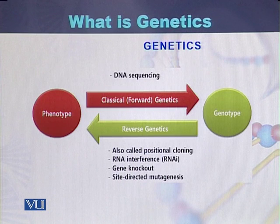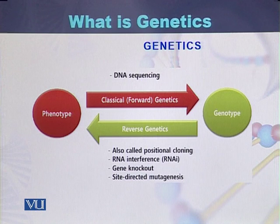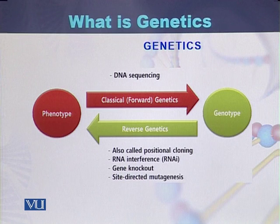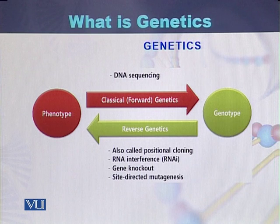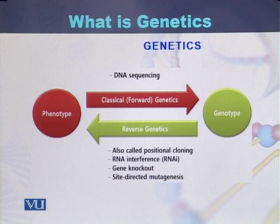If we study genotype based on the phenotype, it is called classical genetics or forward genetics, and it is usually performed by sequencing the DNA. While in reverse genetics, the phenotype is identified based on the genotype. Different methodologies are used for studying reverse genetics, including positional cloning, RNA interference, gene knockouts, and other methods.